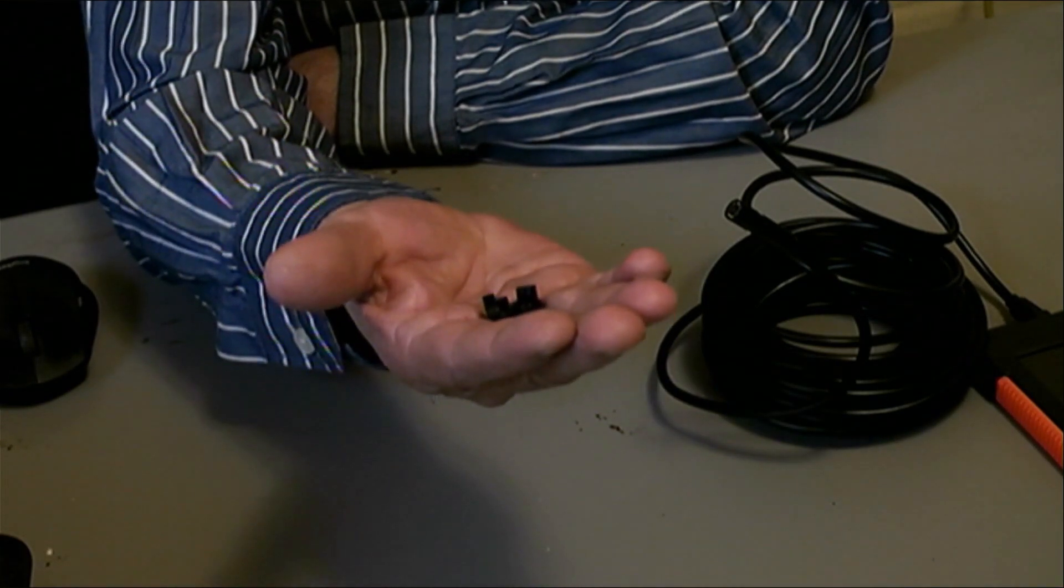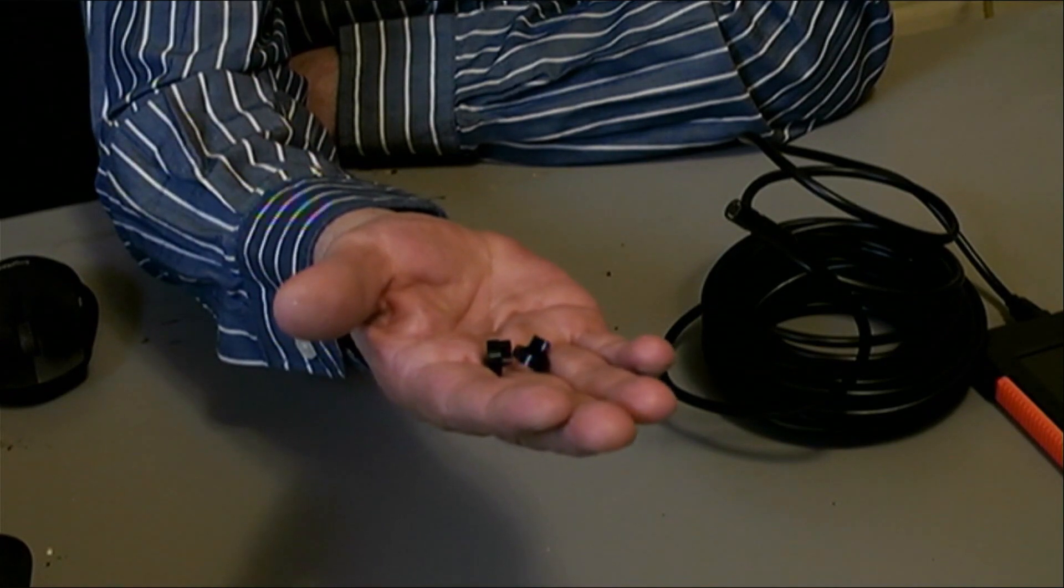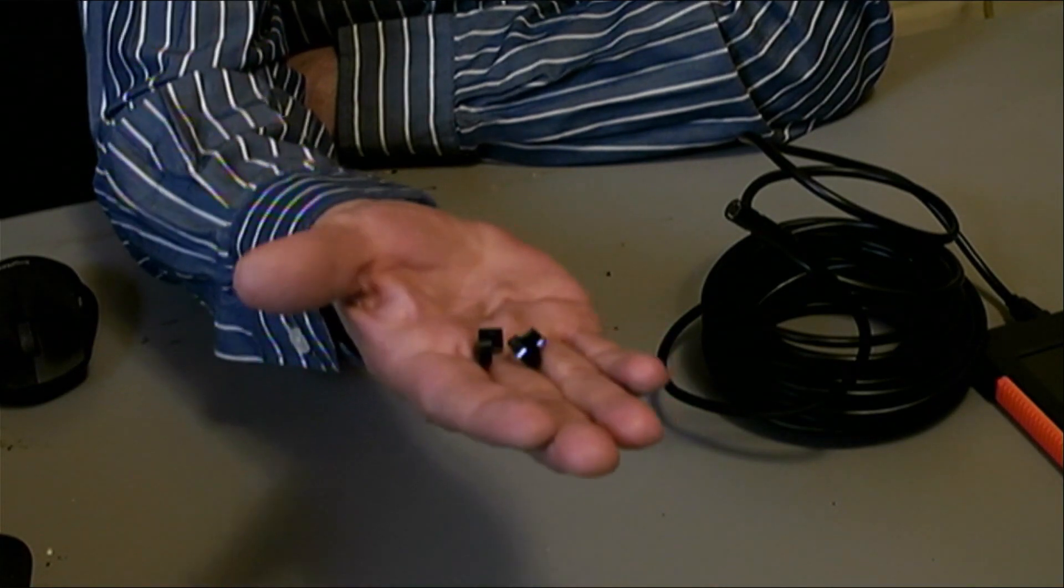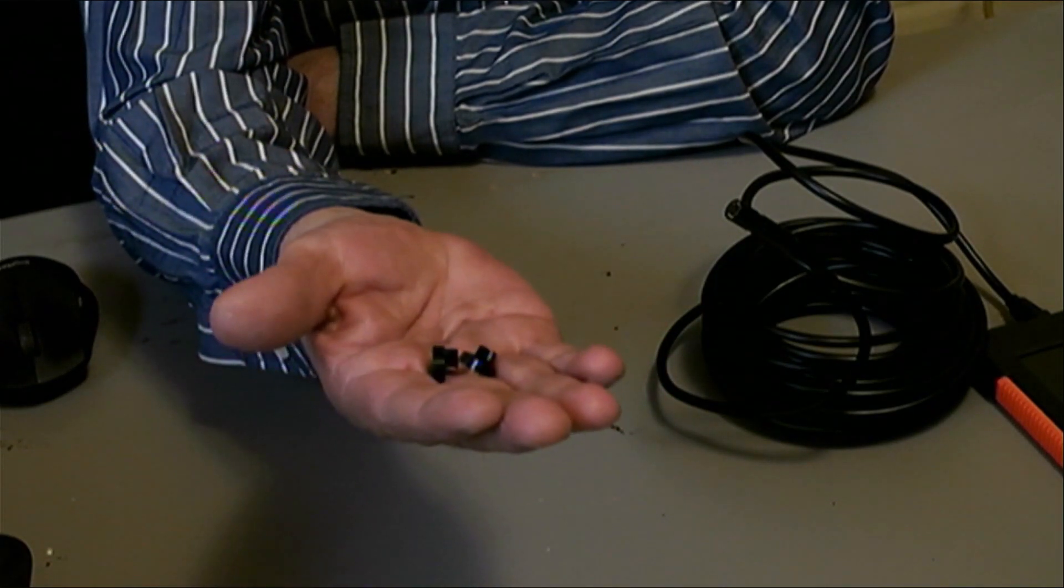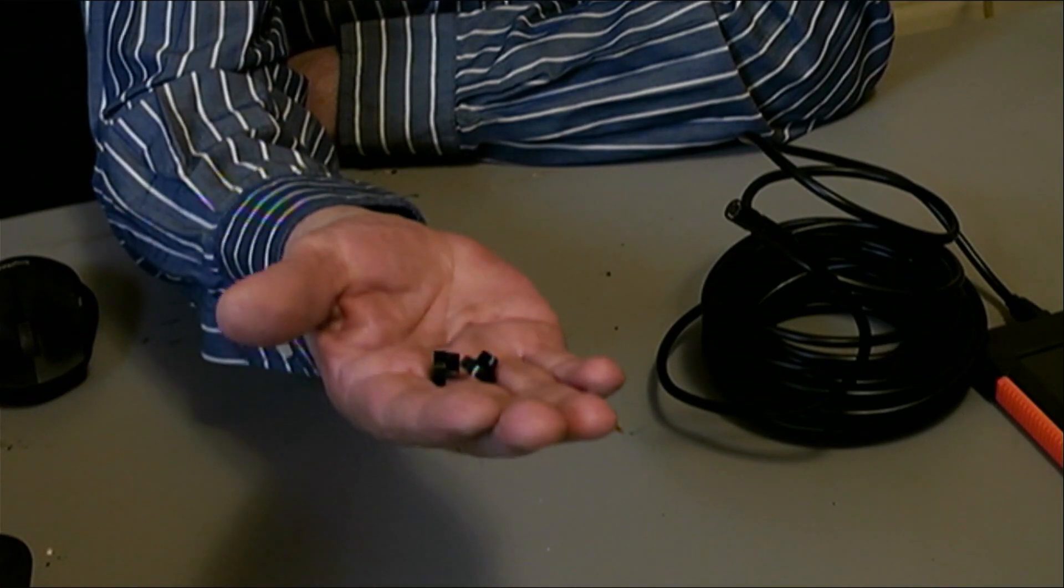When they give you two replacements, that kind of tells you that those things aren't very strong. You stand a really good chance of breaking them.